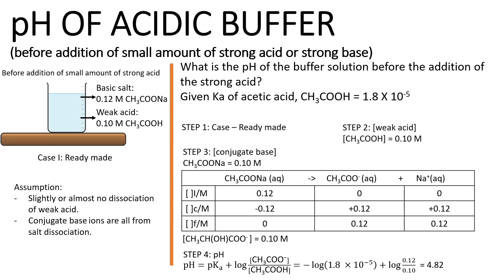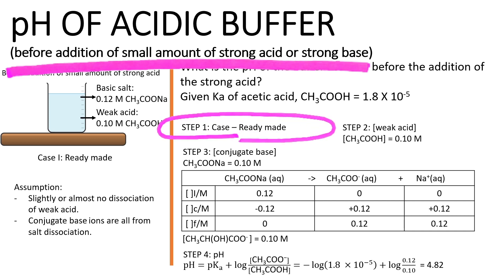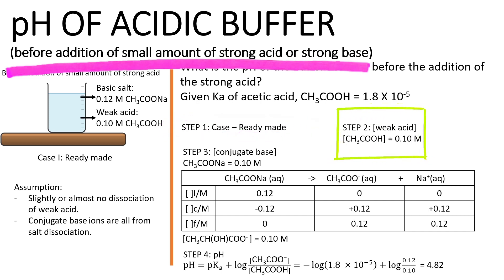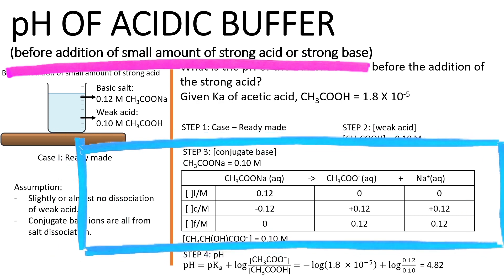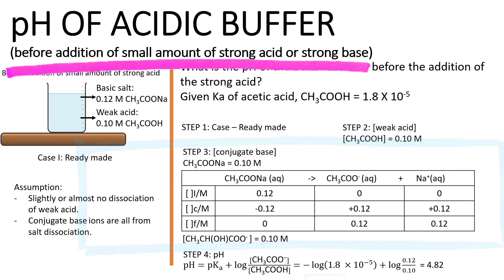In the previous video, I have gone through the four simple steps to determine the pH of an acidic buffer solution before additions of small amounts of strong acid or base. The four steps include: step one, identify the case; step two, list down the molarity of the weak acid; step three, determine the molarity of the conjugate base; and step four, calculate the pH.